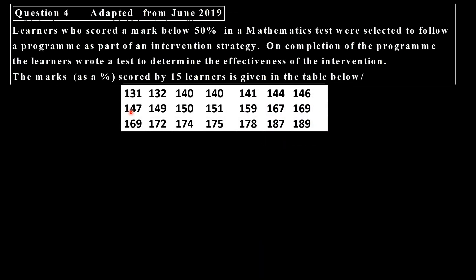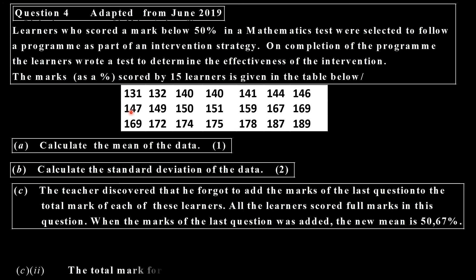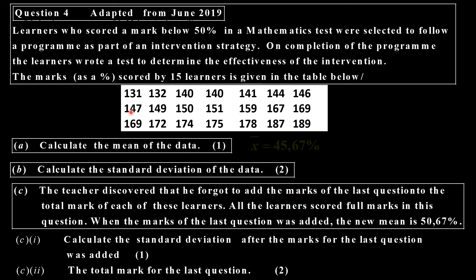Let's look at the fourth question here. Here we have four questions. Let's look at the first one, the mean of the data. That's calculated. That's 45.67. The standard deviation is 13.88.